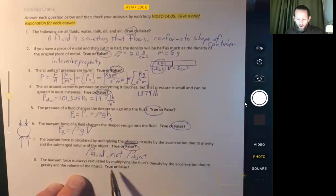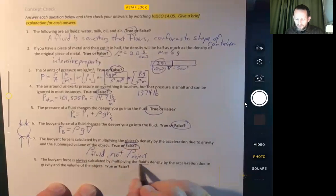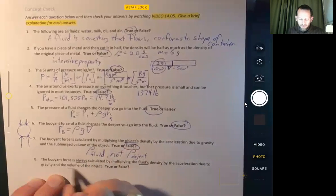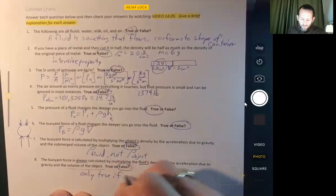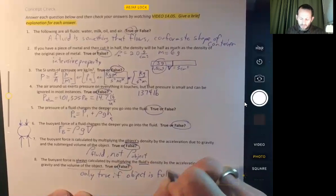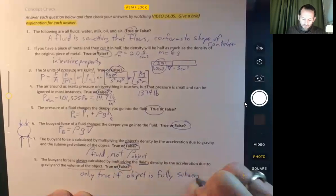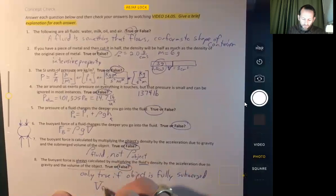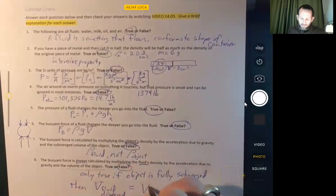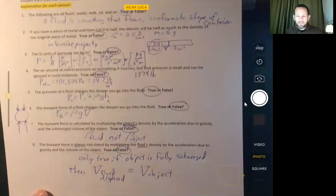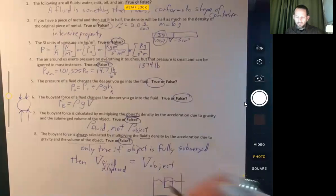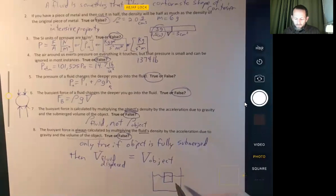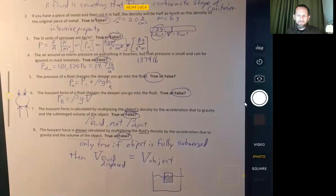And last, buoyant force is always calculated by multiplying the fluid's density, so they got it right that time, times the acceleration due to gravity, and the volume of the object. That is going to be false. It's only true if the object is fully submerged, because if it's fully submerged, then the volume of fluid displaced is equal to the volume of the object. But if you have an object that's not fully submerged, right there looks to be about one-third submerged, the volume of fluid displaced is only equal to that amount, not the volume of the whole object.